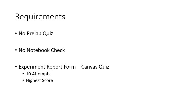There is no notebook check that you need to do. What you are going to be completing is the experiment report form for experiment 11 in your lab manual, and then to turn in this report, you are going to be taking a Canvas quiz. You do get 10 attempts at the Canvas quiz, and it's your highest score that is recorded. The quiz is based on the report form that you fill out in your lab manual.